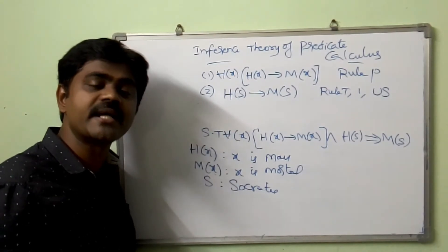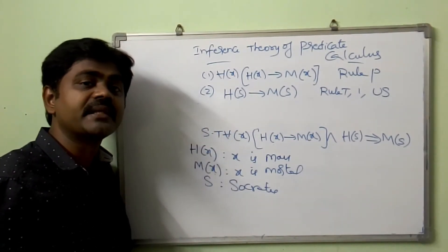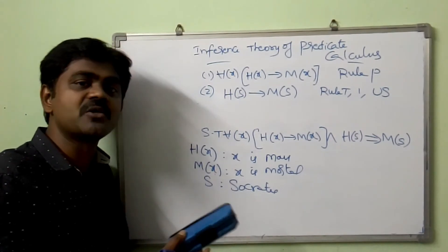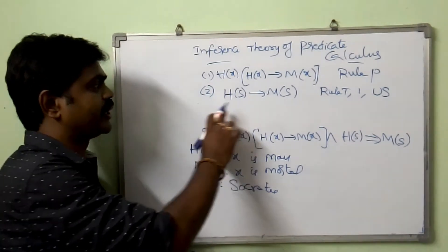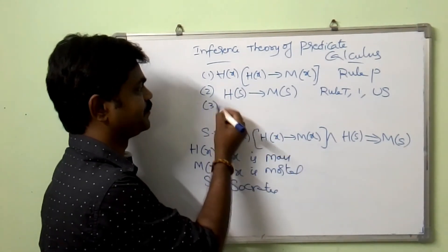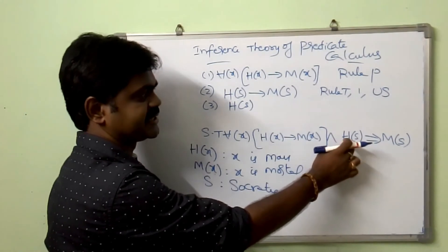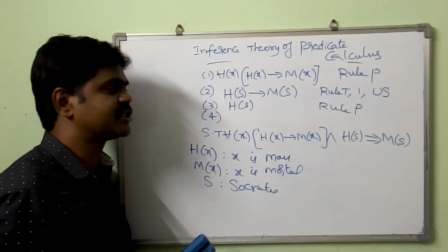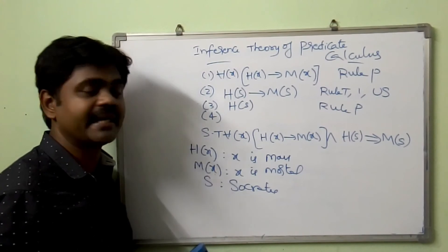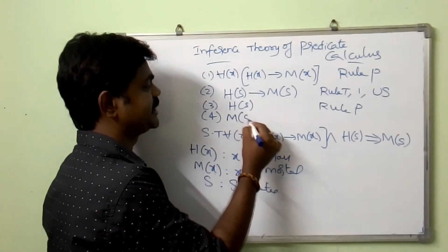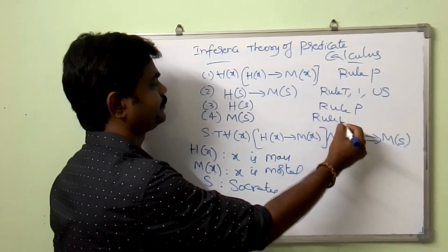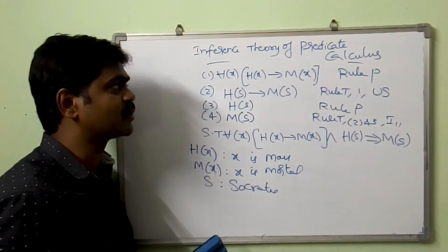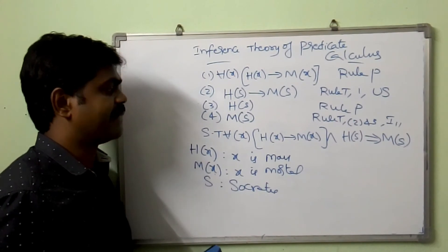So by universal specification, for all x, A(x), we can conclude A(S). In the place of x, my conclusion is Socrates, so I will get S. So I got H(S) implies M(S). And here I have H(S), which is already another premise that is given — this is Rule T. And finally, using H(S) implies M(S) and H(S), by modus ponens I, we will get M(S). Rule T on steps 2 and 3 with modus ponens I.